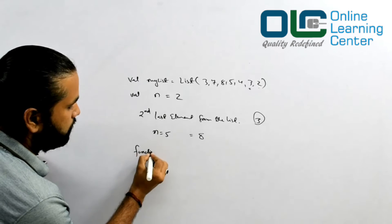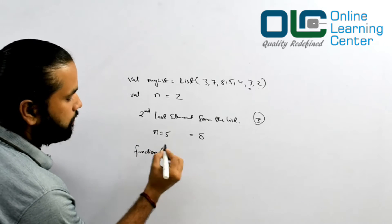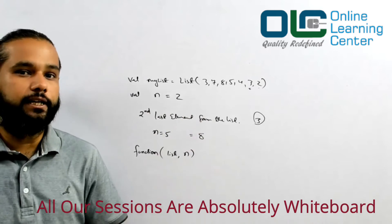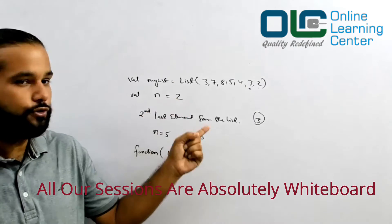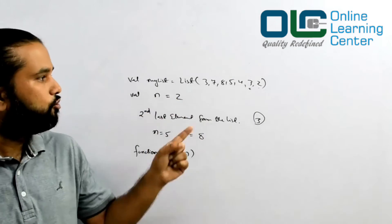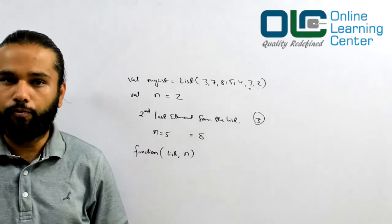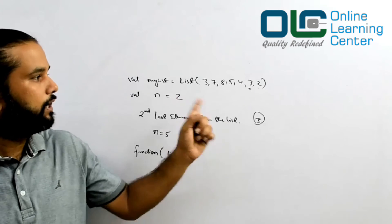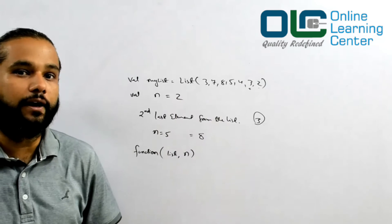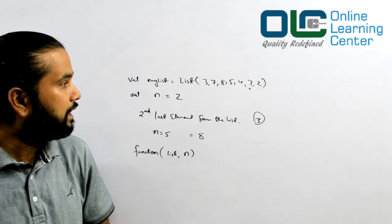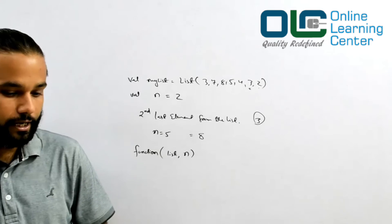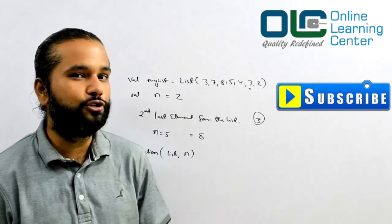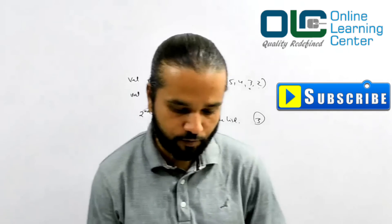You have to write a function which accepts two parameters: number one is the list, second is the number, and your code should be generic — which also means that even if I change n to three, four, or five, you should be able to give the correct output. You may use a technique of recursion to backtrack and find out the actual position wherever your last element can reside. That's a very simple assignment, guys — if you're able to solve it, do let me know in the comment section.